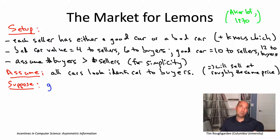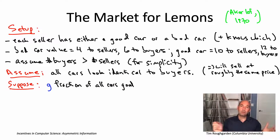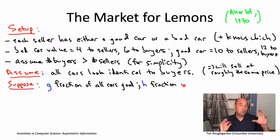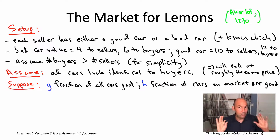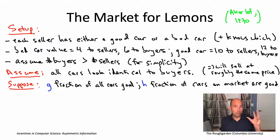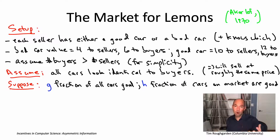First, G denotes the fraction of all cars that could possibly be put on the market that are good. Everybody knows this — say 60% of the cars are good and 40% are bad. Second, H is the fraction of cars actually on the market that are good. If everybody puts their car on the market, H equals G by definition. But we allow sellers to withhold their car if the going price is less than they'd accept — so H might differ from G. If all bad-car owners bring their cars to market but not all good-car owners do, H will be less than G.